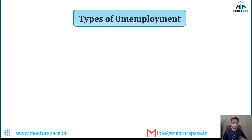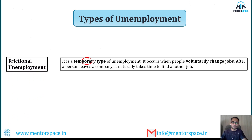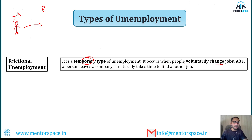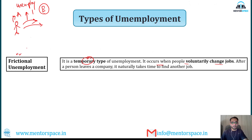Frictional unemployment is a temporary type of unemployment. It occurs when a person voluntarily changes jobs — going from Company A to Company B. They leave their job at Company A and look for a job at Company B. During this time period they are unemployed, and this phase is known as frictional unemployment. It naturally takes time to find another job.